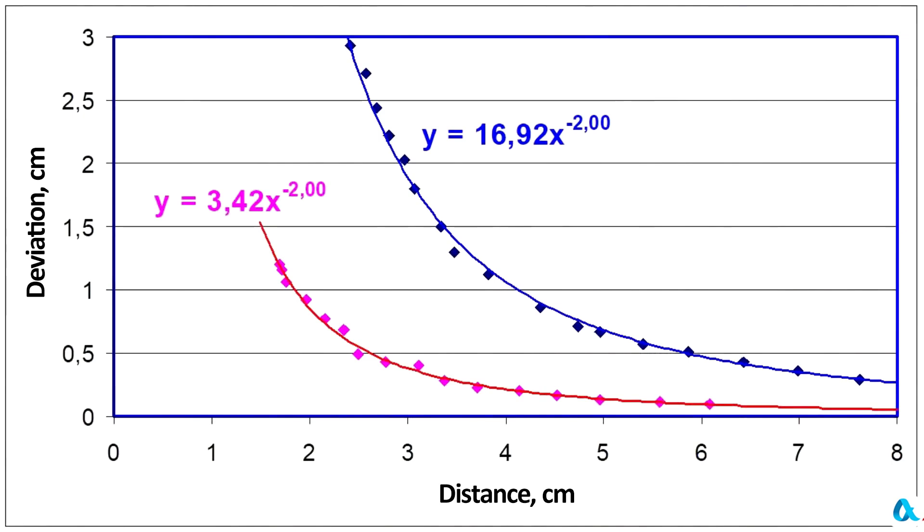And here are the experimental points and their approximation by power functions. The power is quite in order here. Both times it is equal to minus two. The inverse square law is fulfilled with good accuracy. But the coefficients for this power differ not by four times as I expected but almost by five times. In this regard the experiment turned out to be quite rough.